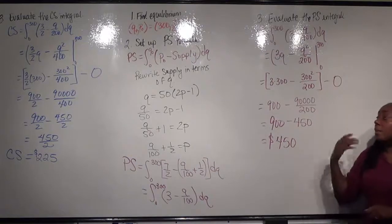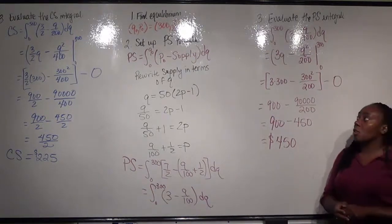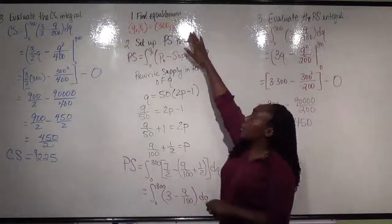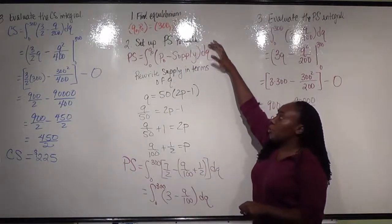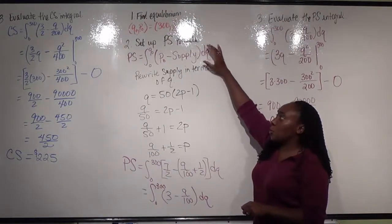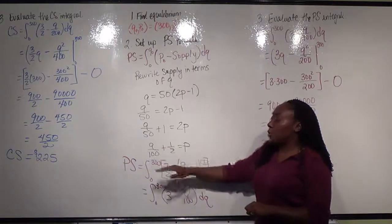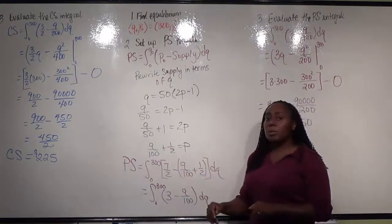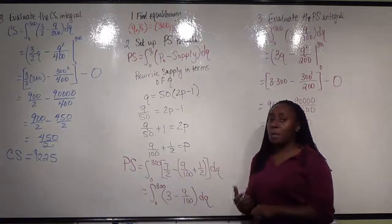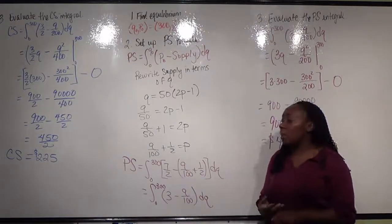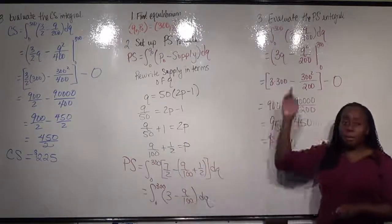The setup for all of these problems is the same: start by getting your equilibrium. Once you have the equilibrium, set up your equation for producer or consumer surplus. Make sure your variables are in the right form — meaning your supply and demand are in terms of q. Then plug in and evaluate.